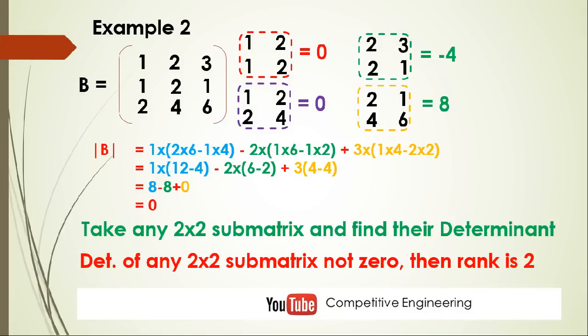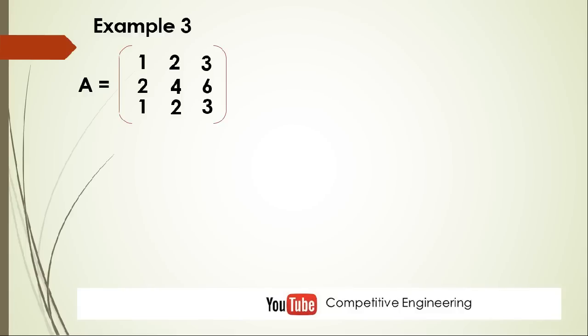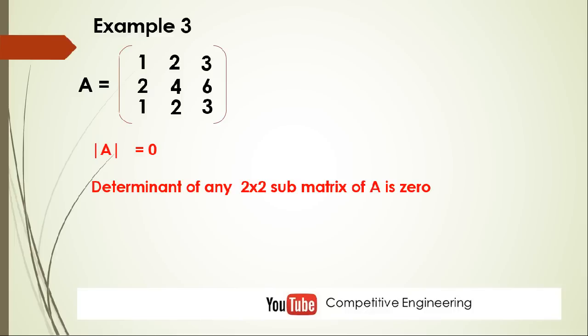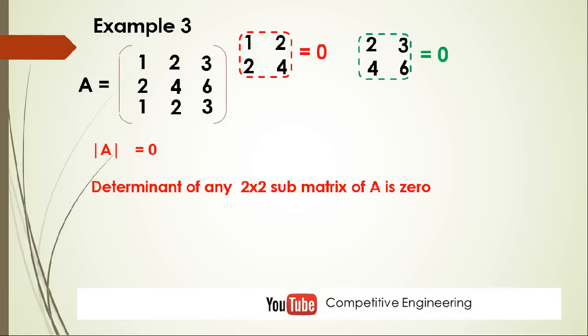There may also be a case where all 2x2 sub-matrices have determinant zero. Let us discuss that with example 3: matrix A equal to [1, 2, 3; 2, 4, 6; 1, 2, 3]. We find the determinant of A and get 0. Then we check the 2x2 sub-matrices: the upper-left [1,2; 2,4] has determinant 0, [2,3; 4,6] is also 0, [2,4; 1,2] is 0.